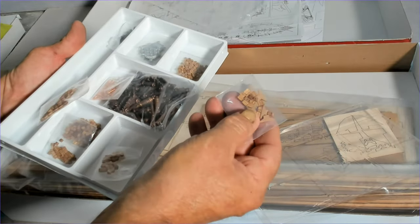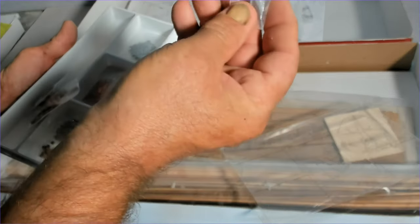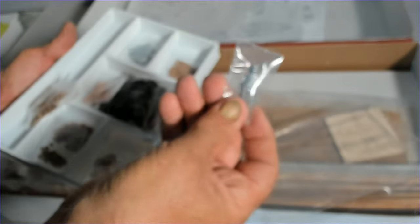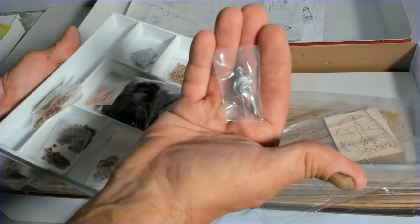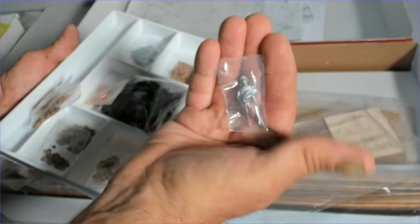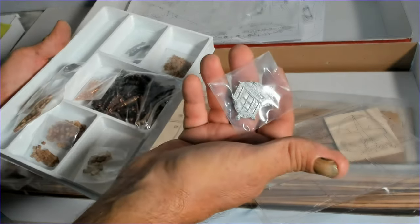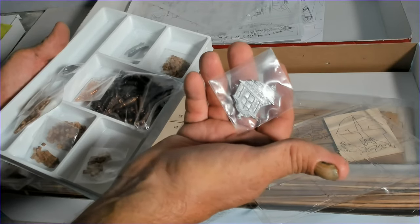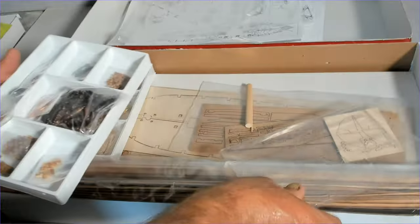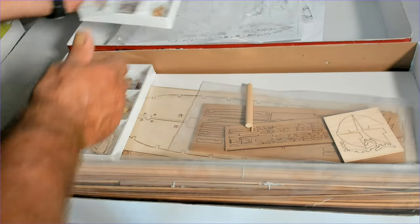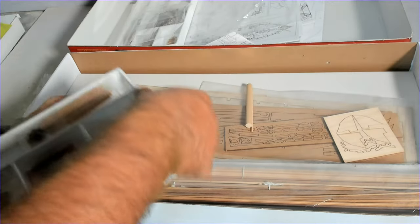That's the figurehead that goes onto the bow of the ship. And then we have a couple of pieces that would go onto the side of the stern I would imagine. And then the next tray.